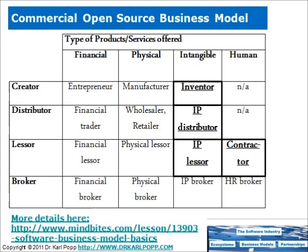A creator creates something — so for example, a creator of physical goods is a manufacturer. A distributor distributes something, basically trades. A lessor lends something, provides something for rent — so for example, a lessor of physical goods is a landlord. And then we have broker, which is not relevant to our topic here.